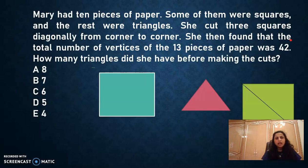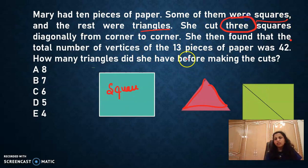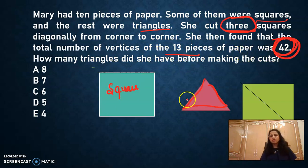Okay, let's go to next question. And the last question for today's evening. So let's see. Mary had 10 pieces of paper. So she has 10 pieces of paper. Either she has a square paper or she has triangular paper as seen here. And the rest were triangles. So there are two shapes. And now she cut three squares diagonally from corner to corner. So how many squares are being cut? Three squares are cut. You don't know how many squares are there and how many triangles. But out of the total squares she is having in the shape of paper, she is cutting three squares. And then she found that the number of vertices of the 13 pieces of paper is 42. This is very very important.